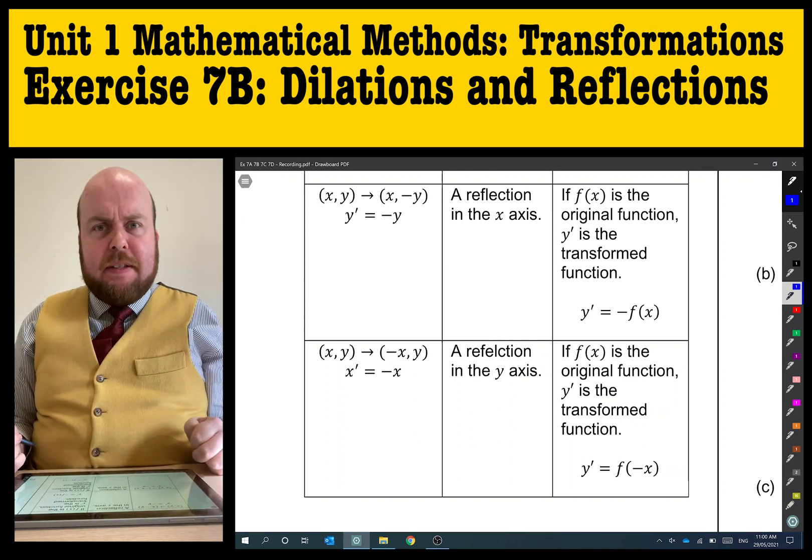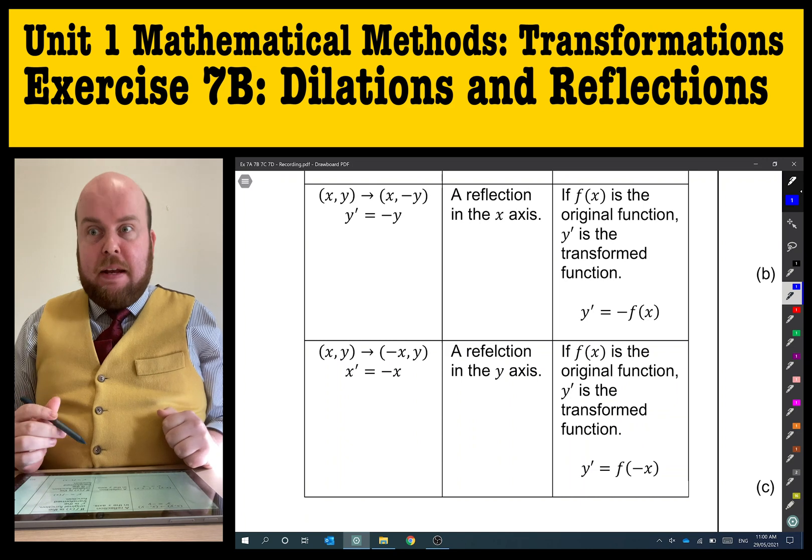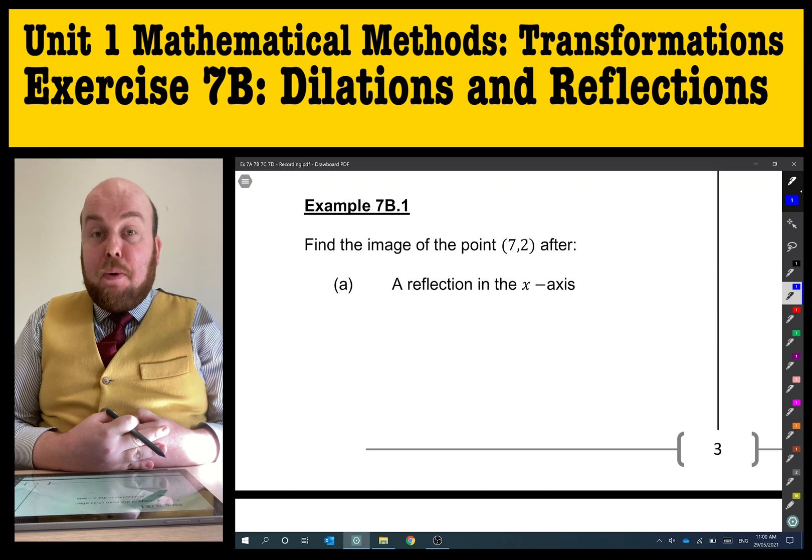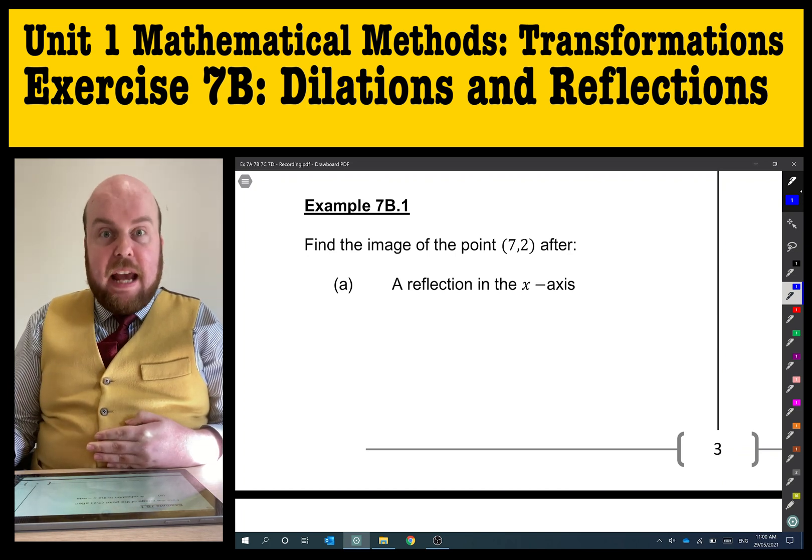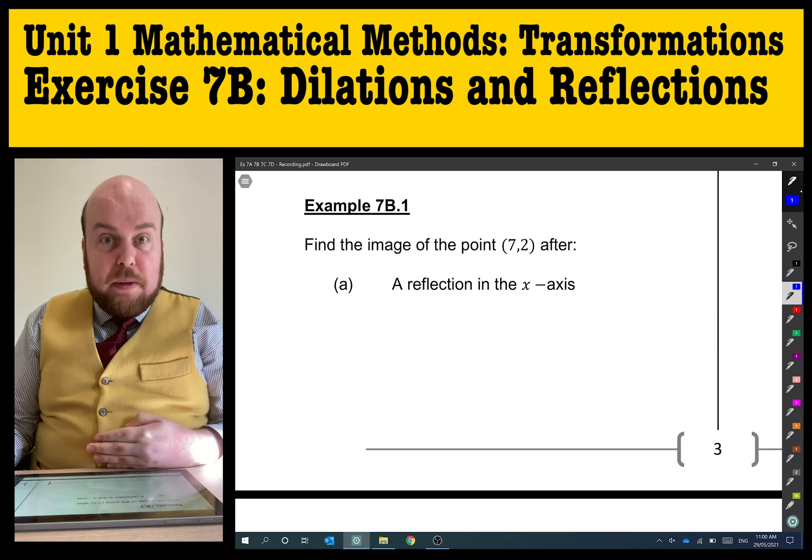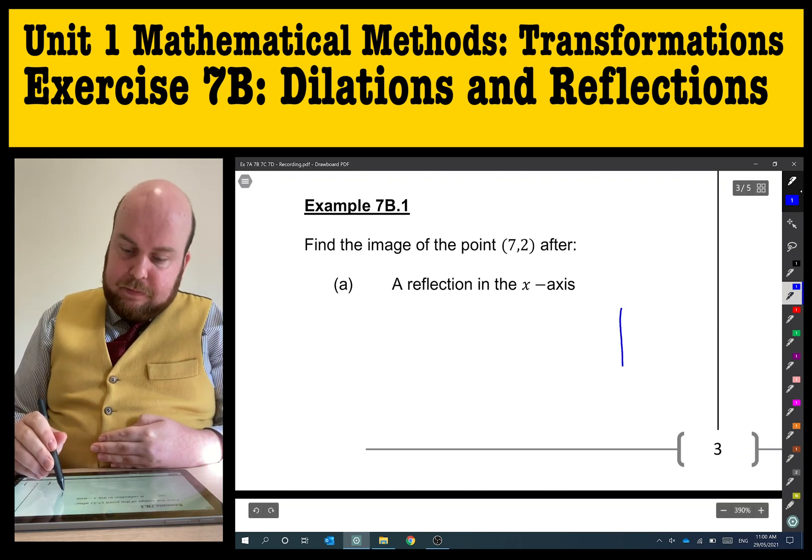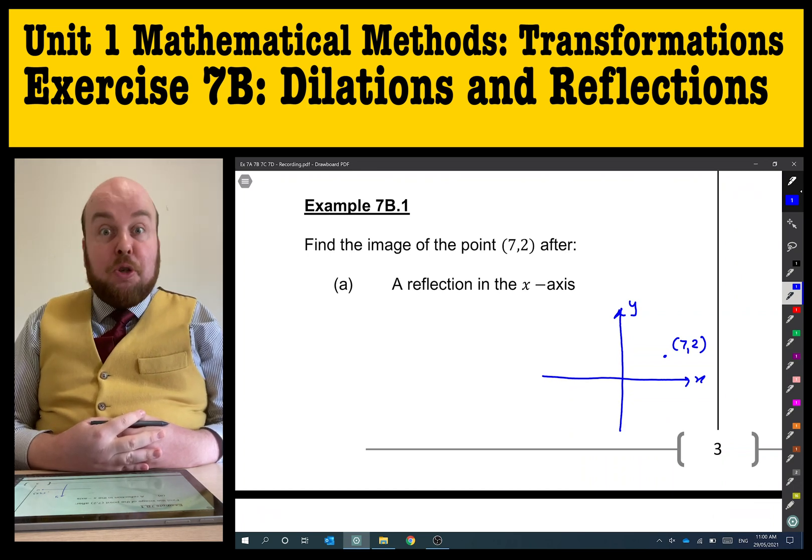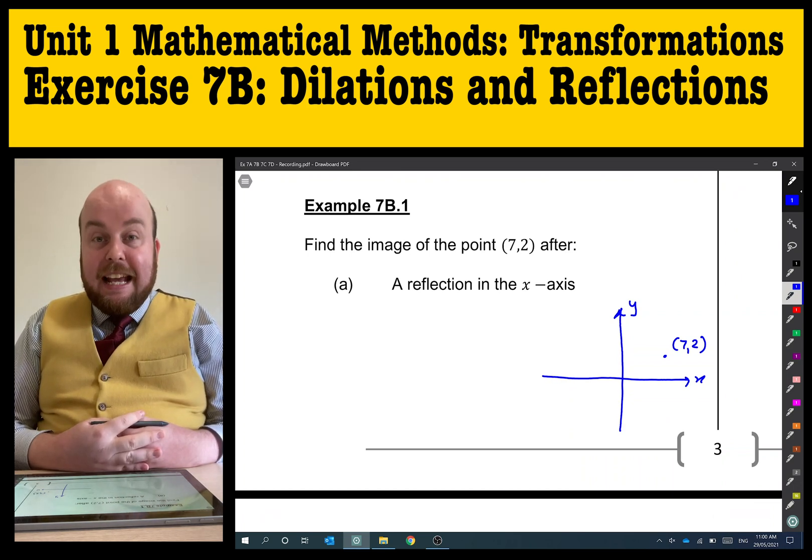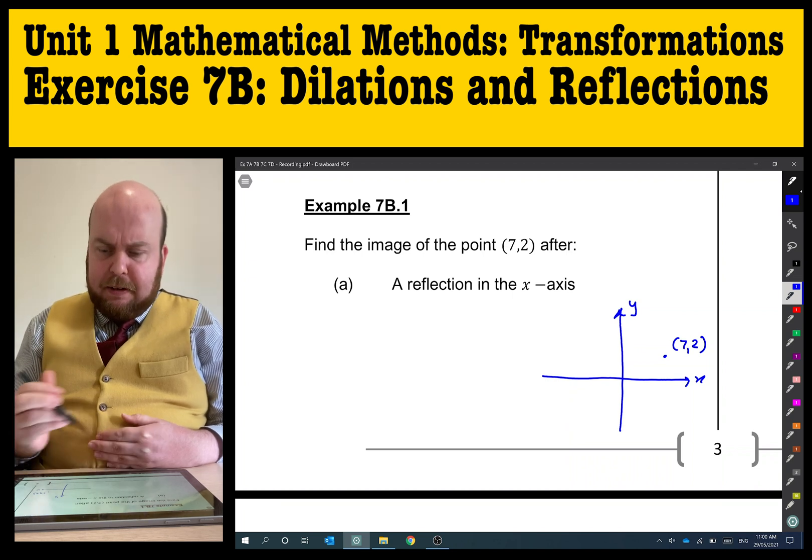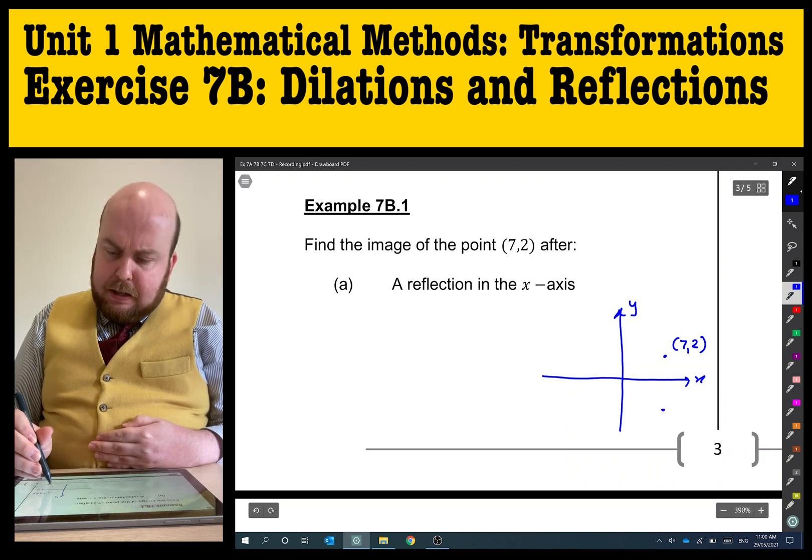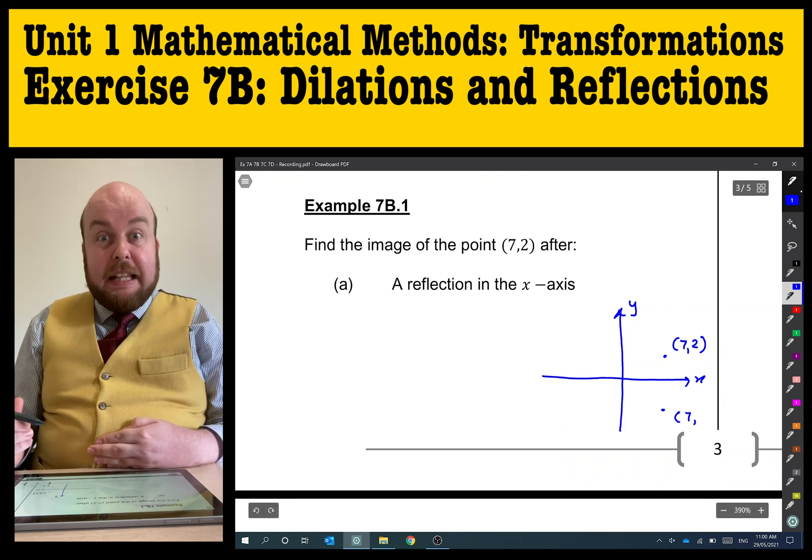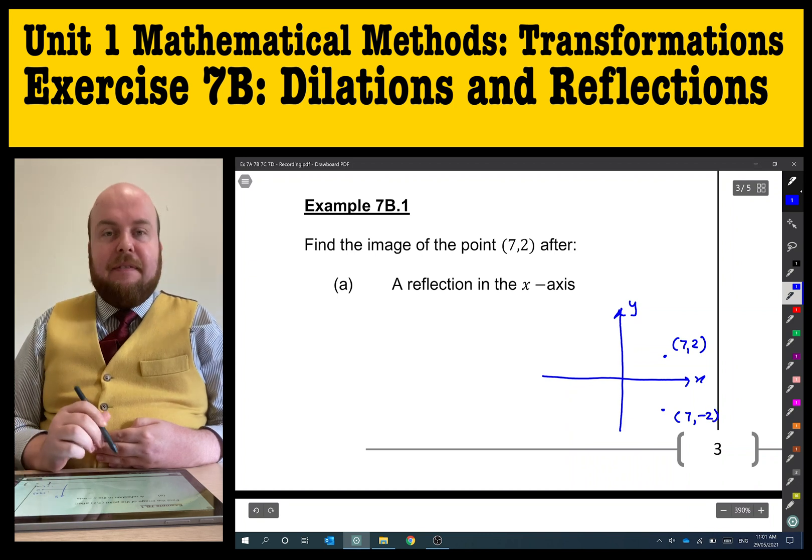Let's go and do a couple of examples. Example 7b.1. Find the image of the point (7,2) after a reflection in the x-axis. We can do this visually and then systematically as well. There is my coordinate (7,2). A reflection in the x-axis means I'm going to be flipping it upside down. The x-ordinate would stay the same, but if I'm flipping it directly upside down, it's going to become negative 2.